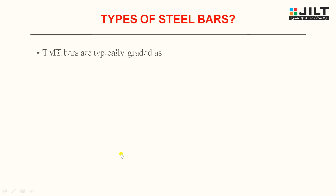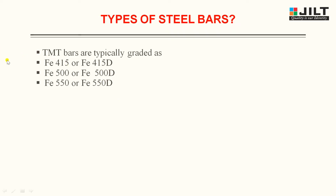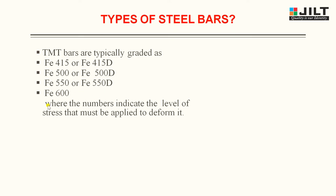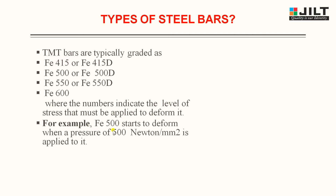Now let us see the types of steel bars available in the market. TMT bars are typically graded as FE415 or FE415D, FE500 or FE500D, FE550 or FE550D, and FE600. The number indicates the level of stress that must be applied to deform it. For example, FE500 starts to deform when a pressure of 500 Newton per mm square is applied on it.